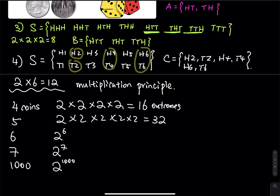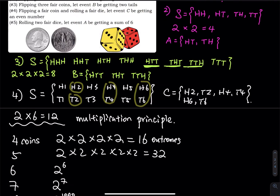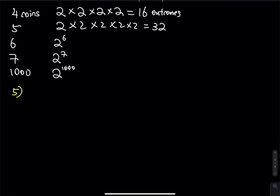Number five: you roll two fair dice, with event A being getting a sum of six. How many outcomes do you expect in the sample space? The first die has six faces, the second die has six faces — using the multiplication principle, six times six is 36 outcomes in your sample space. If you roll three dice, that would be six times six times six.